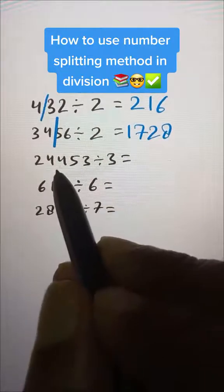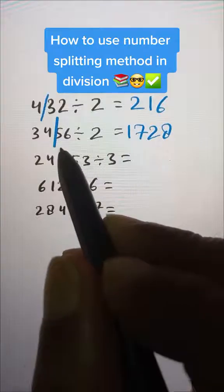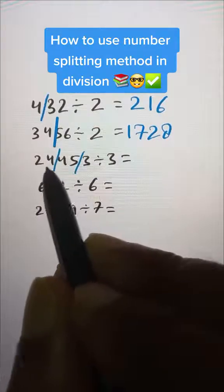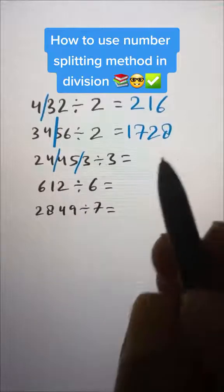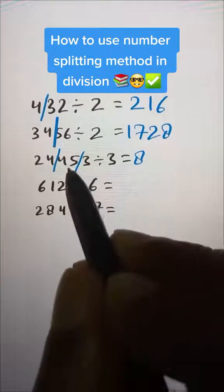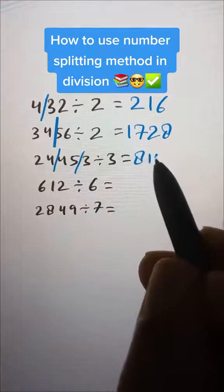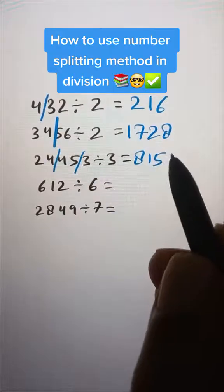Now here we can split at 3 places. Let's split here and then here. 24 divided by 3: 3 times 8 is 24. Then 3 times 15 is 45 and 3 times 1 is 3, giving us 8151.